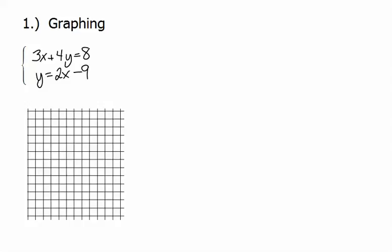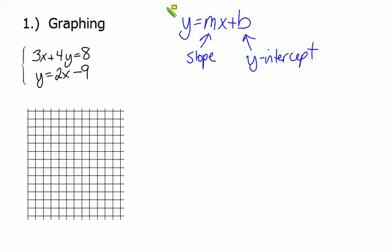Back in Algebra 1, there were three ways we solved the system of equations. The first was by graphing. When we want to solve a system of equations by graphing, we need to get each equation in slope-intercept form. That's this y equals mx plus b form, where the m is the slope and the b is our y-intercept.